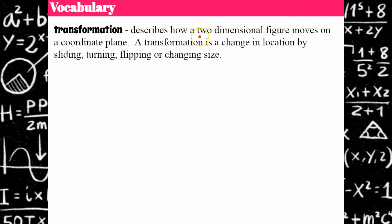So not a three-dimensional figure — not three measurements, not length, width, and height — just length and width or base and height. And we talk about a transformation as a change in location, and it can happen in four different ways.